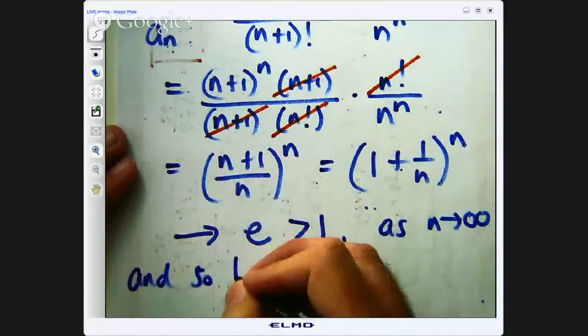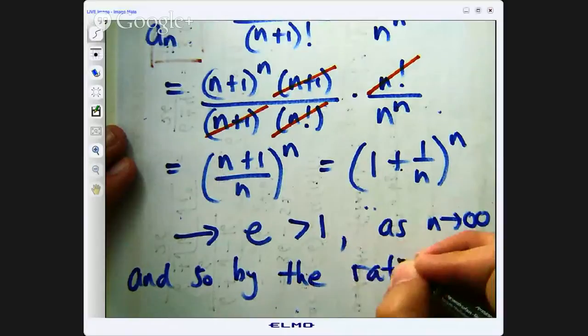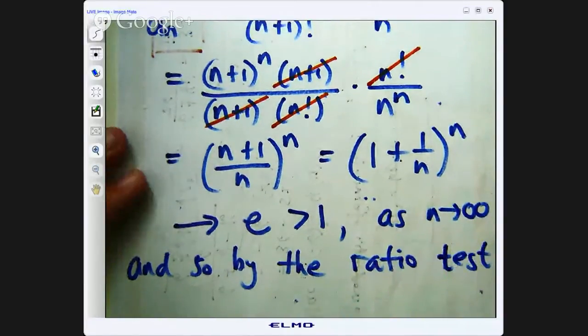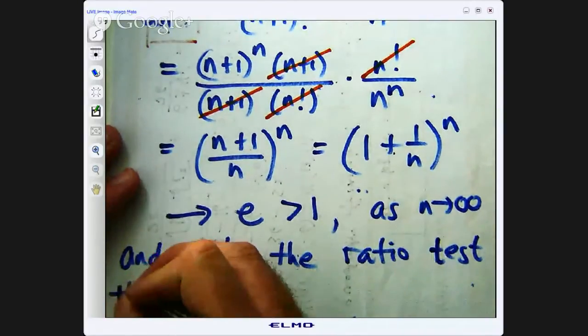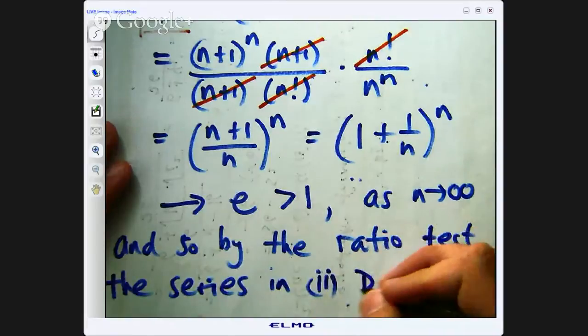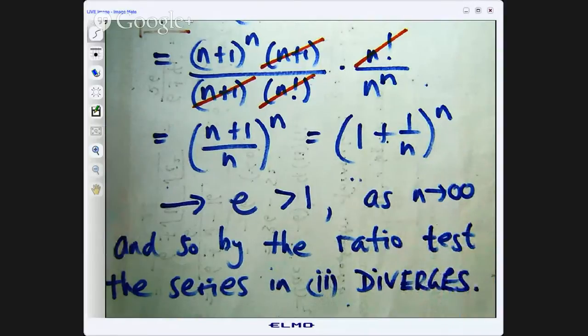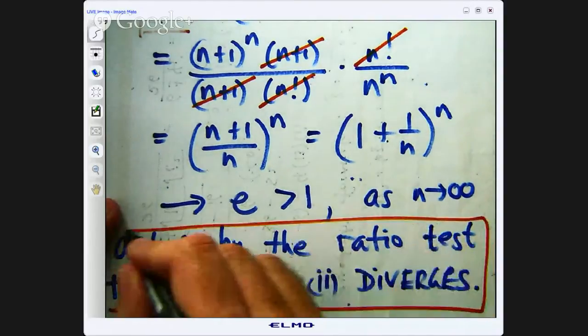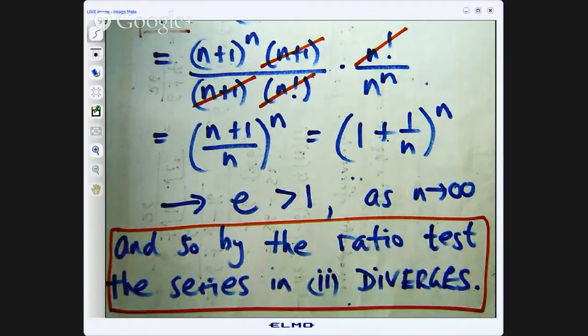So the limit of this expression is the magic number e, which is about 2.7183. All right. So e is about 2.7183, which is greater than 1, as n goes to infinity. So the limit now of this ratio is this number e, 2.7183, which is strictly greater than 1. So what does that mean? Well, the ratio test says that if the limit of the ratio is strictly greater than 1, then the original series must diverge. So let's make that conclusion. The series in 2 diverges. All right. So we box that up.